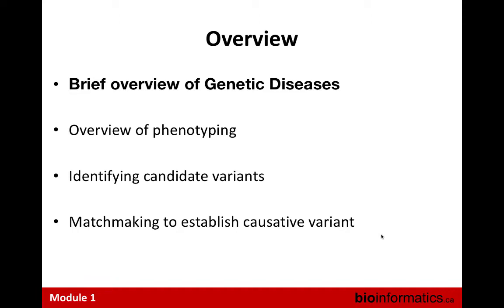I'll talk about phenotyping — what goes into actually describing patient features — identification of candidate variants, what goes into identifying which of the variants in somebody's exome or genome actually causes their disease, and something called matchmaking to establish which variant actually is causative. Sometimes you actually need to have a little dating game between patients with rare diseases, and we'll actually do that as part of the lab.